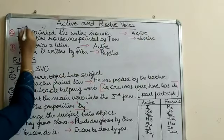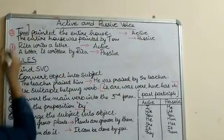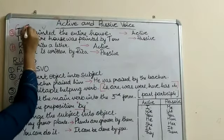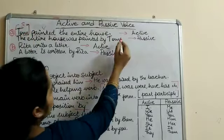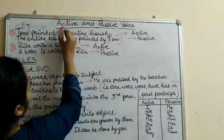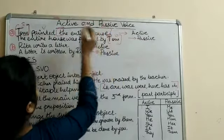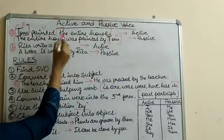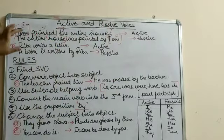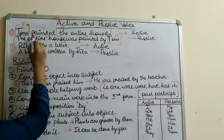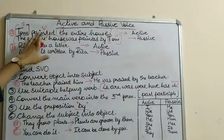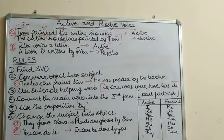In these two sentences, Tom is the subject. When we change it into the passive, Tom becomes the object. The subject in the passive is the entire house. The word 'painted' is the verb — the action which is done is 'painted.'